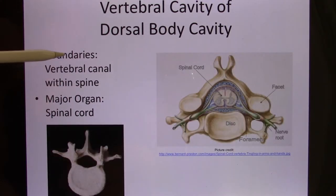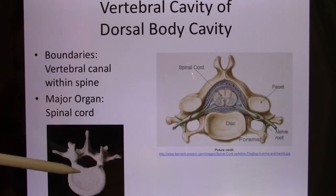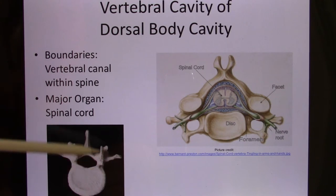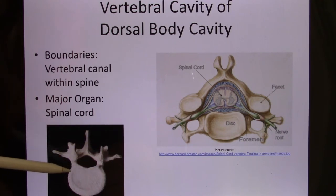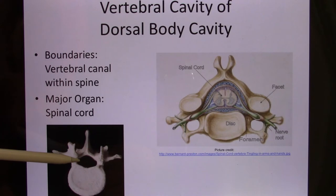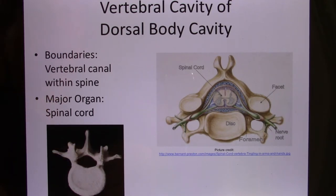Your vertebral cavity — the spinal cord runs inside it. When we talk about the bones, we'll discuss this. Every hole in anatomy is called the foramen. This is the vertebral cavity; it protects the spinal cord.